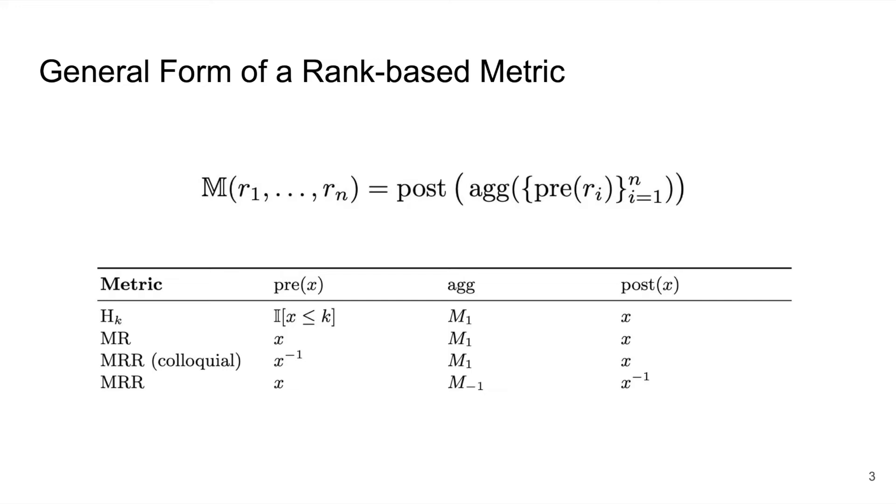First, there's a pre-transformation function applied to the ranks. In the case of hits at k, this is the indicator function. In the case of the mean reciprocal rank, this is the inverse function. And in the case of the mean rank, this is the identity.